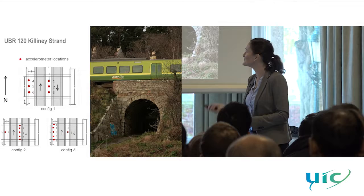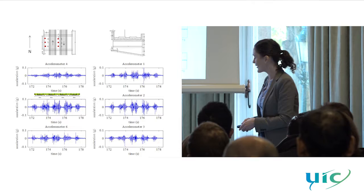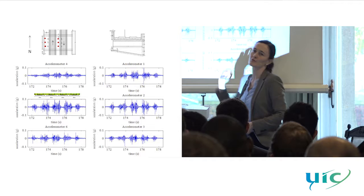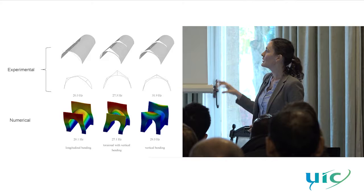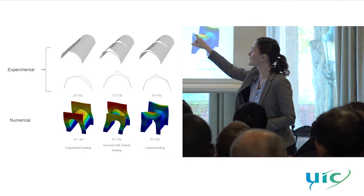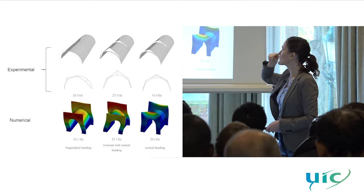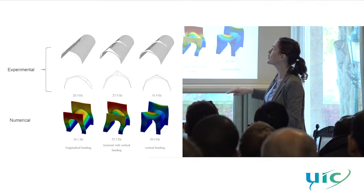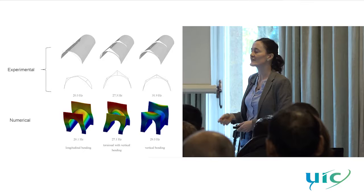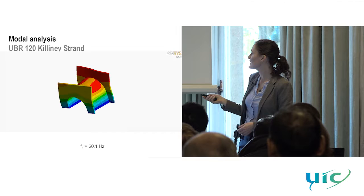We looked at the acceleration data under passing trains — mostly DART or LUAS light commuter rail trains — and post-processed these to pull out the different frequencies for the structure excited under live load. Comparing them with our numerical model showed quite good matches, so we felt we were starting off on the right foot. We did update the model to fine-tune this, primarily by updating the fill stiffnesses.